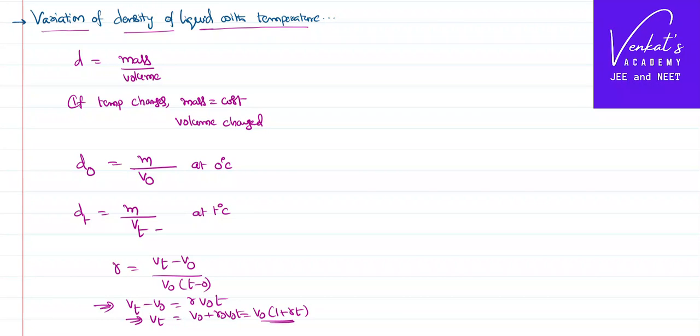I know the value of VT. So if I do DT by D0, DT means M by volume at T by M by V0. This is M by volume at temperature T, volume at 0 by M. M and M can cancel. So density at T degrees by density at 0 degree centigrade is volume at 0 by volume at T.